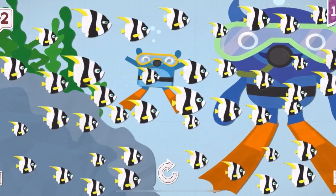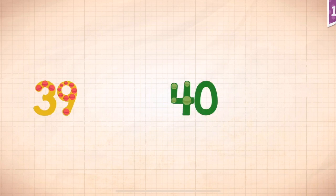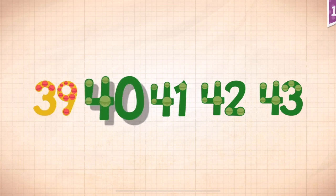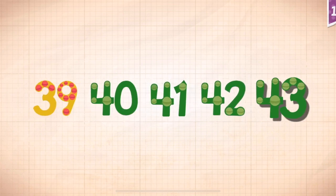Little Blue and Big Blue were joined by a school of 42 colorful fish. Count by ones starting at 39. 39, 40, 41, 42, 43.